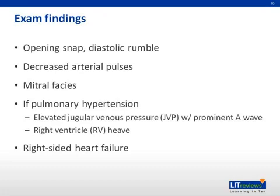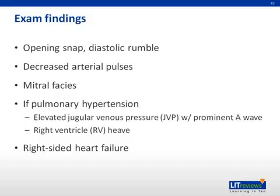Exam findings of mitral stenosis can be somewhat difficult to identify in mild disease, but are usually easily identified in more severe disease. An opening snap can be heard after the second heart sound, best appreciated at the apex and the left lower sternal border when the leaflets are still mobile. It is distinguished from a split S2 because the split S2 is usually loudest at the base. A diastolic rumble is also appreciated at the apex, best in the left lateral decubitus position and increased by exercise. A late diastolic murmur is associated with mild MS because it is only heard during atrial systole, while a continuous murmur is associated with more advanced disease. Decreased arterial pulses can be felt due to decreased cardiac output.